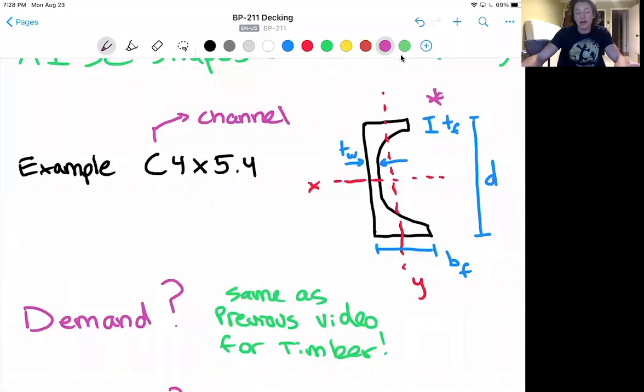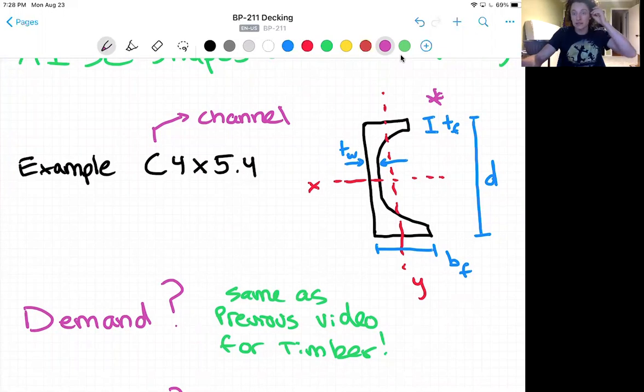Now when we're calculating demand it should be the same as the previous video for timber. Nothing is changing or if things are changing it is just the span or the spacing but these values should be changed in your design tool and we'll calculate the moment in the same way we calculated our design moment, design shear or demand moment and demand shear for the timber video.